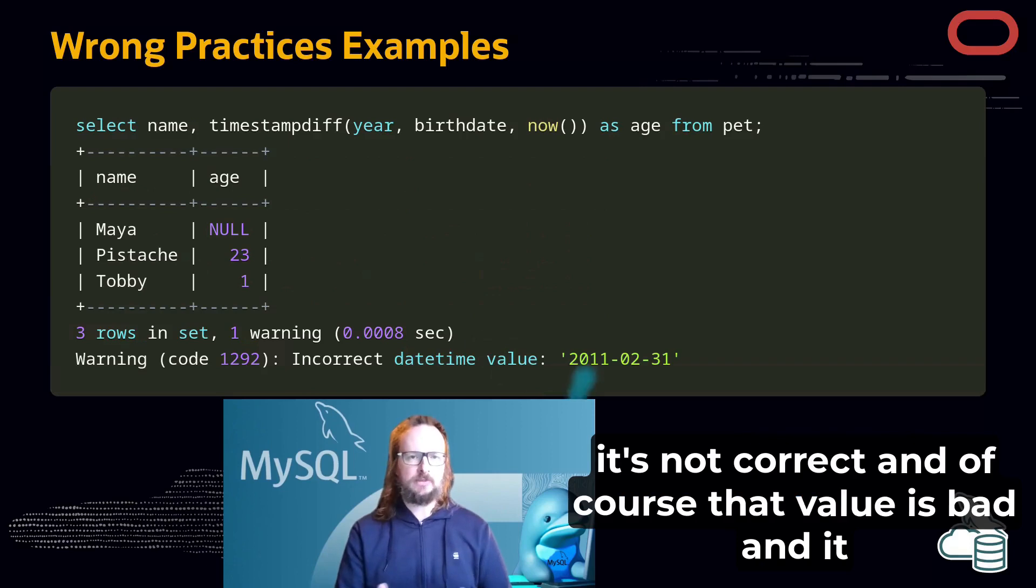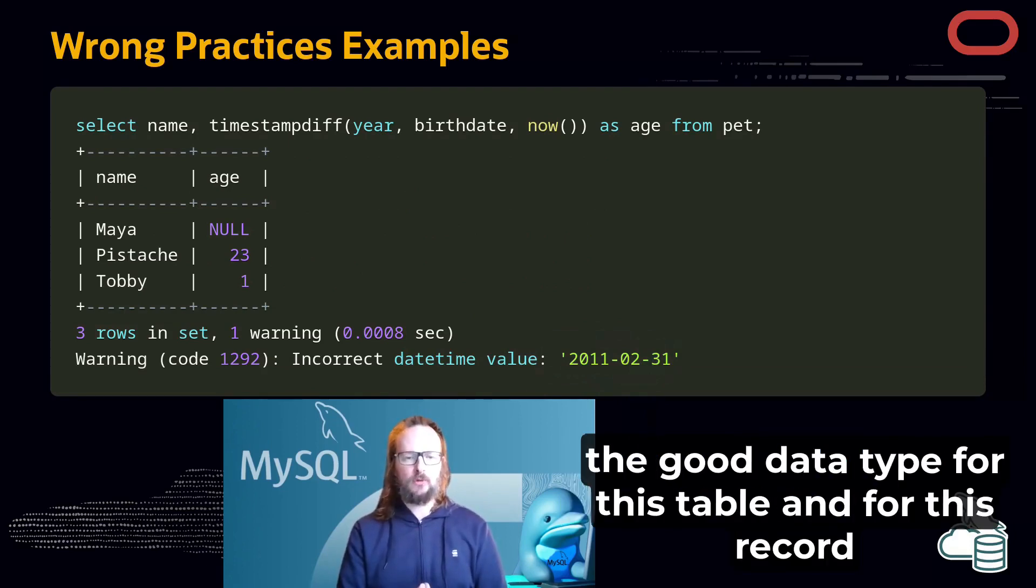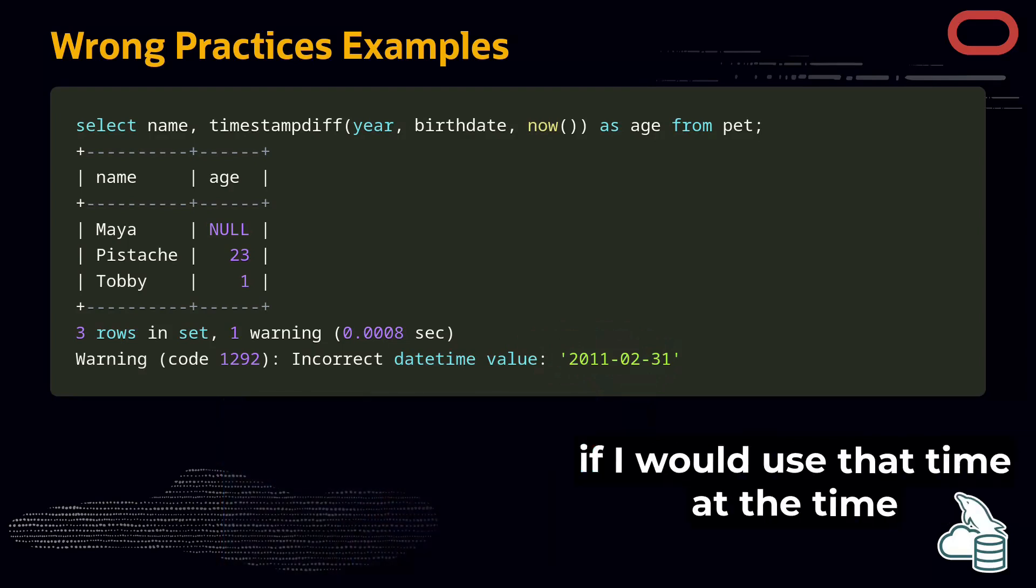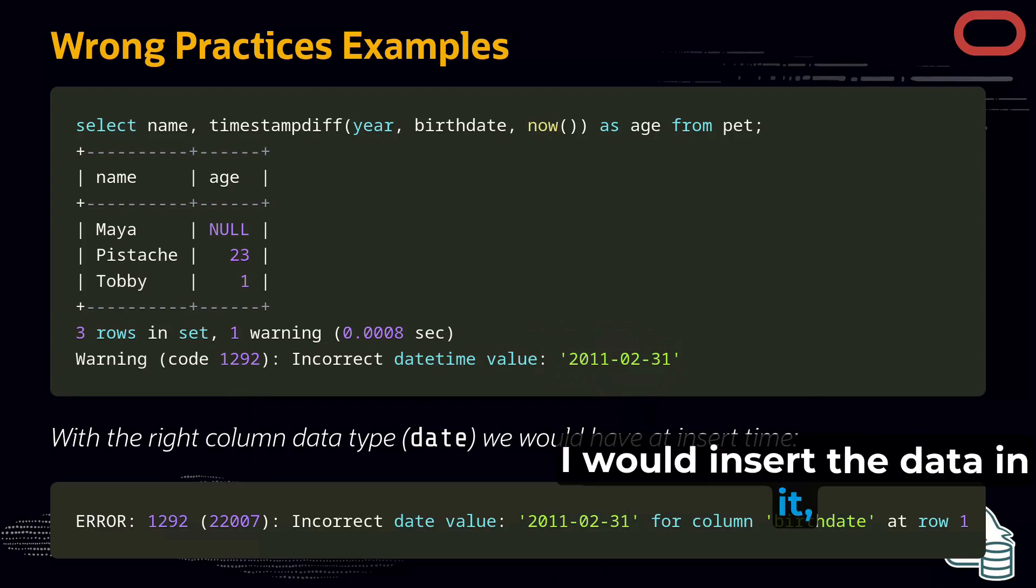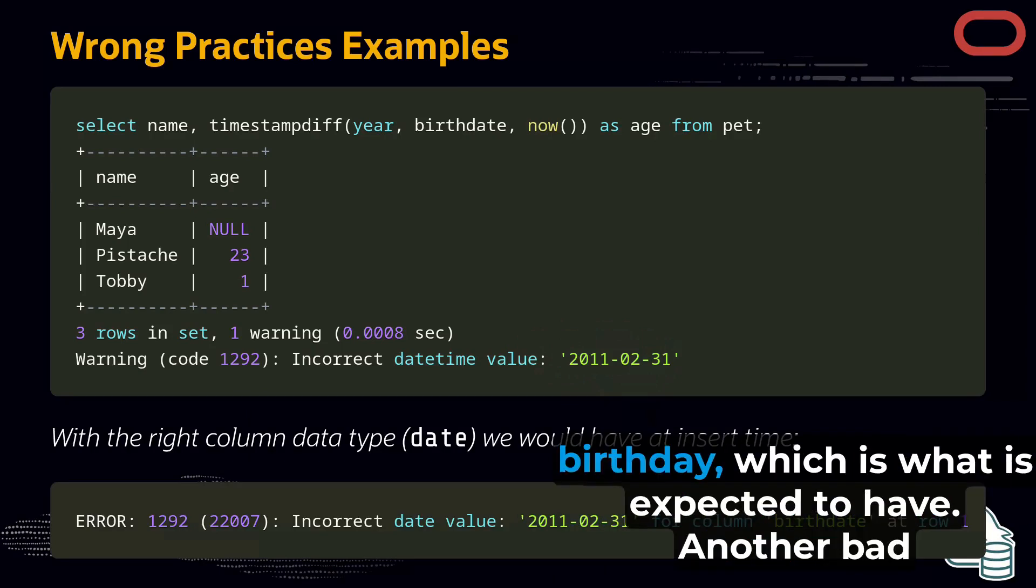And of course, that value is bad and it is expected. If we would have used the good data type for this table and for this record specifically, it would have been much better. For example, if we use datetime, at the time I would insert the data in it, I would have gotten a warning about the incorrect value for the column birthday, which is what is expected to have.